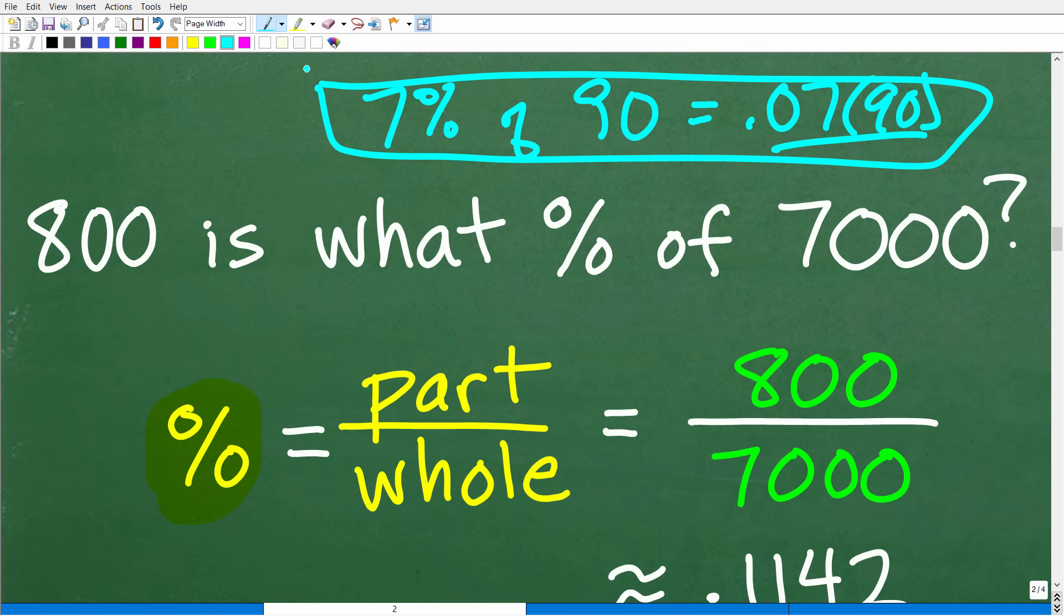So 800 is what percent of 7,000? Well, one good way to think about percent questions is that you'll have a part out of a whole, right? So if one is 50% of two, well, that's one out of two is 50%, right? So one represents the part, and two is the whole.